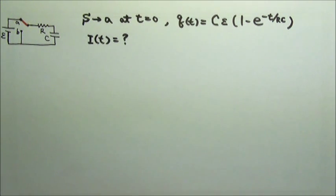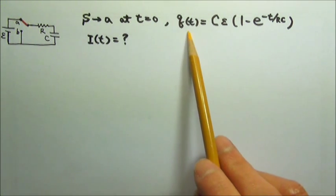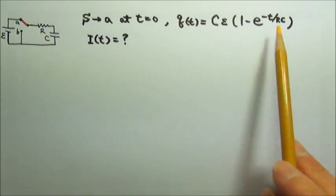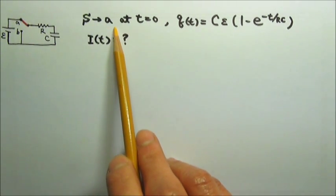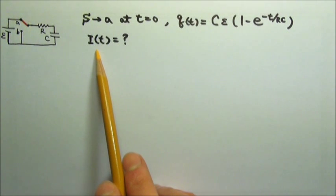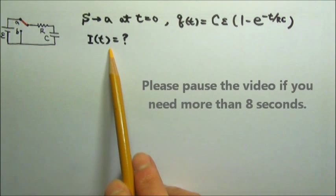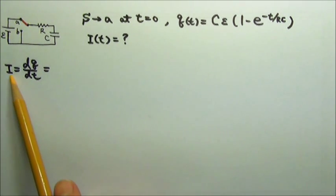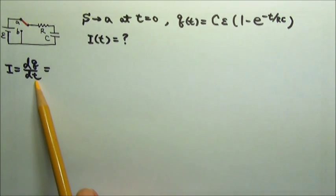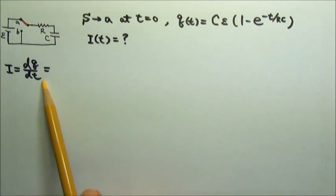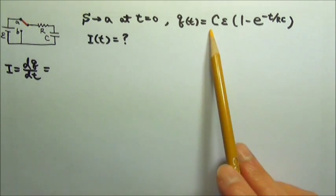In the last lesson, we found the charge on the capacitor as a function of time after the switch goes to A. Now let's find the charging current as a function of time. During charging, the current equals dQ/dt, so we just have to take the time derivative of this.